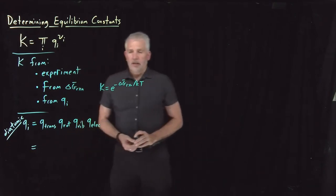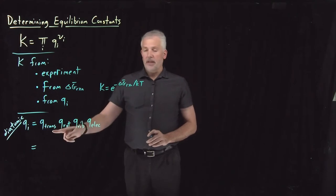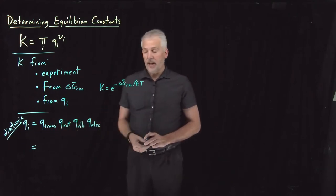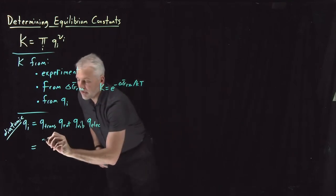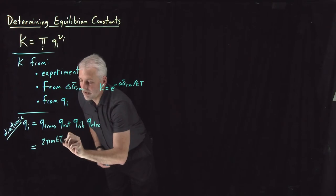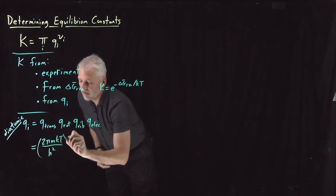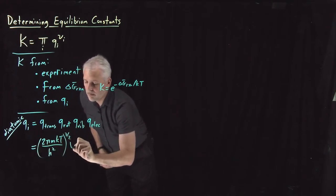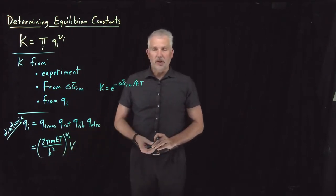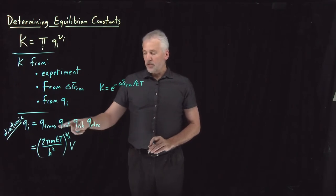If the gas phase molecule behaves like a particle in a box — so behaves like an ideal gas — then the partition function is going to look like (2π m kT / h²) raised to the 3/2, multiplied by volume. That's what we've considered previously as the translational partition function for an ideal gas.